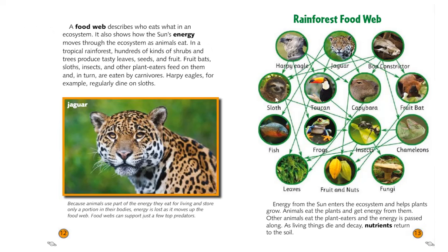A food web — something we've seen before. A food web describes who eats what in an ecosystem. It also shows how the sun's energy moves through the ecosystem as animals eat one another. In a tropical rainforest, hundreds of kinds of shrubs and trees produce tasty leaves, seeds, and fruit. Fruit bats, sloths, insects, and other plant eaters feed on them and in turn are eaten by carnivores — meat eaters like the jaguar. Harpy eagles, for example, regularly dine on sloths. Because animals use part of the energy they eat for living and store only a portion in their bodies, energy is lost as it moves up the food web. Food webs can support just a few top predators.